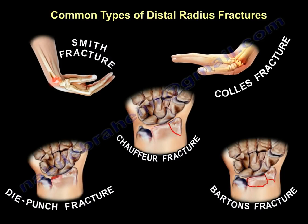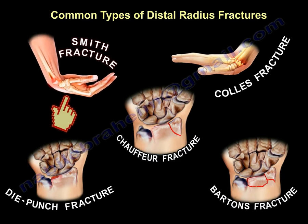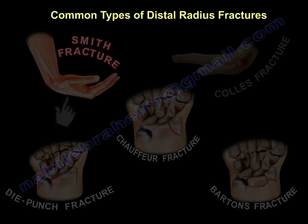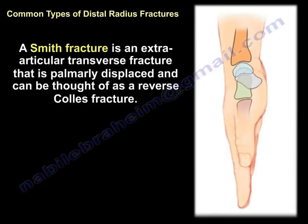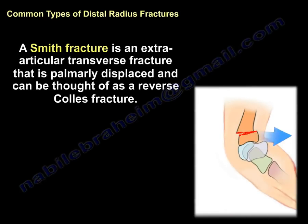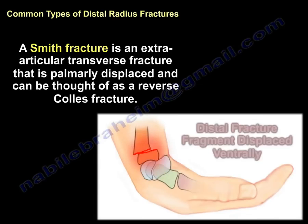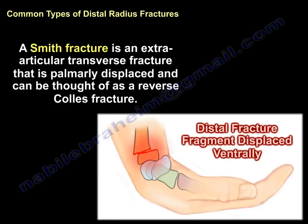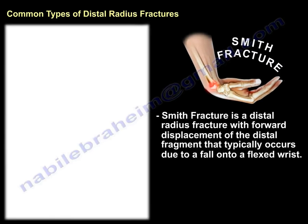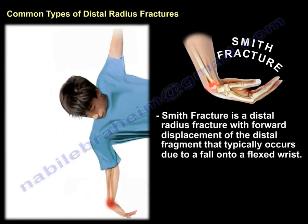Another type is a Smith fracture, which is predominantly an extra-articular transverse fracture that is palmarly displaced and is always thought to be a reverse Colles fracture. You can see that the fracture fragment is displaced ventrally or palmarly. It can occur from a fall onto a flexed wrist.